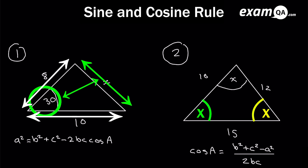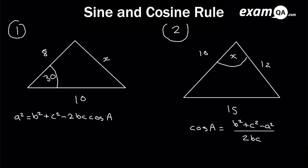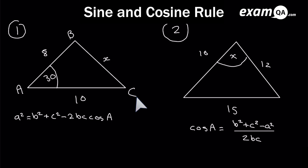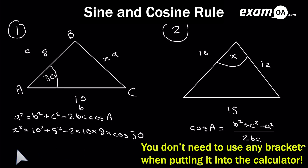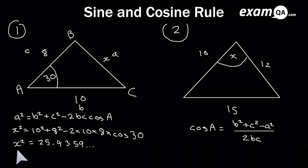Let's go back and finish the working for scenario one. We label the known angle as capital A. X is little a as it's opposite capital A; 10 is little b opposite capital B; and 8 is little c opposite capital C. Fill that into the formula — you can throw it all into your calculator in one go to get x squared without any arithmetic errors. Once you have x squared, square root it to get x equals 5.04 to 3 significant figures.